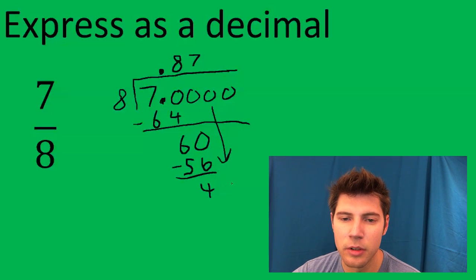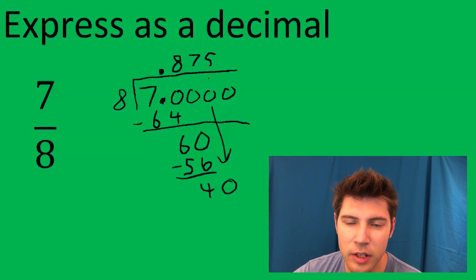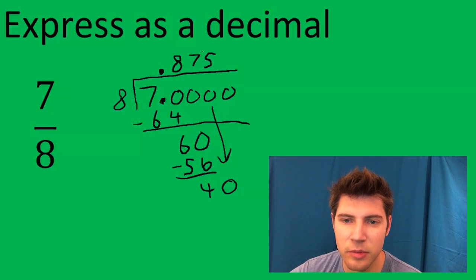Bring down the other 0. 40. How many times does 8 go into 40? 5 times. When we do 8 times 5 we get 40.